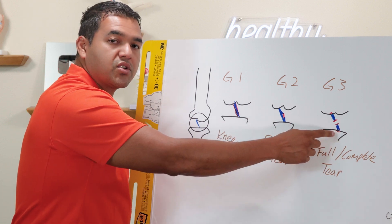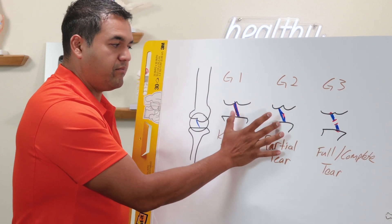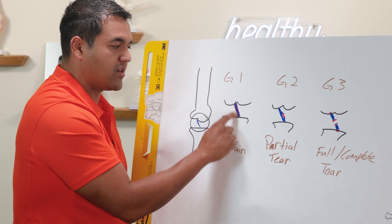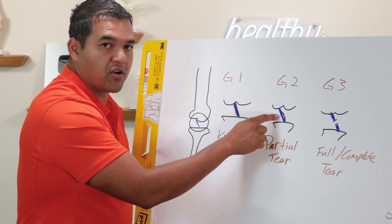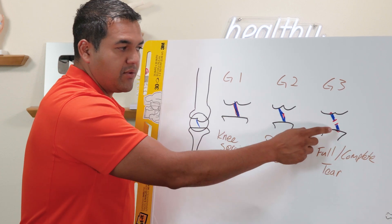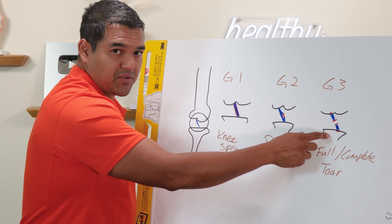And these are the ones that go to surgery. This one will never have surgery because it's still connected and I've never seen anybody with a partial tear have surgery. These are the ones that are often candidates for surgery.